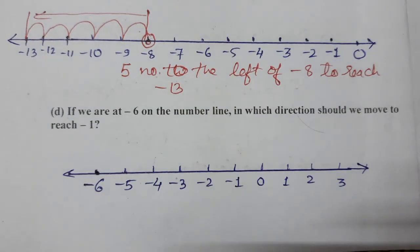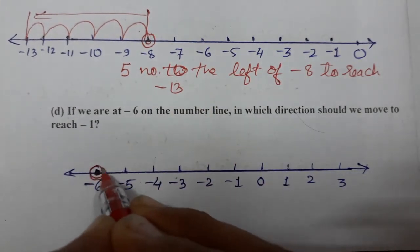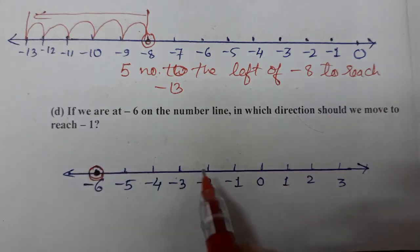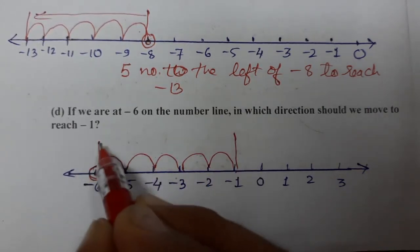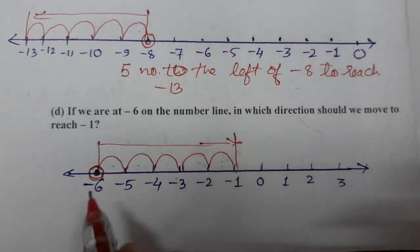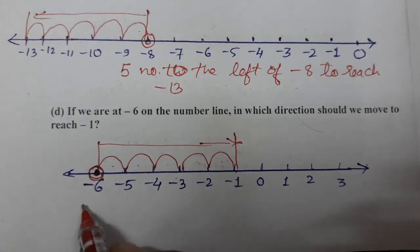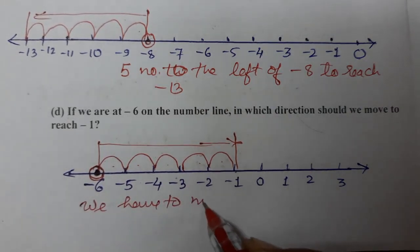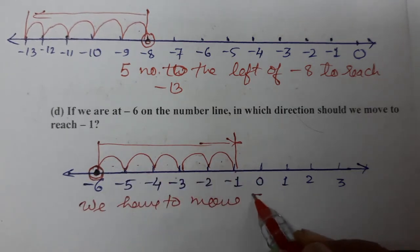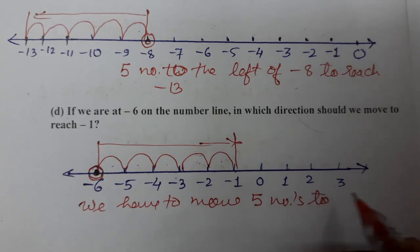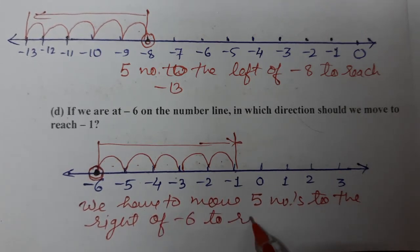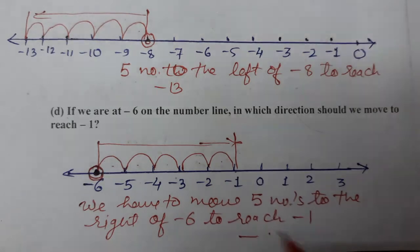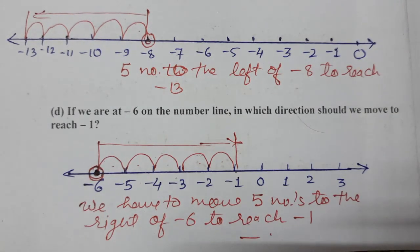We are at minus 6. To reach minus 1, we count: 1, 2, 3, 4, 5. So we have to move 5 numbers to the right of minus 6 to reach minus 1. This completes question number 10, all 4 parts. I hope you understood. Thank you so much for watching the video.